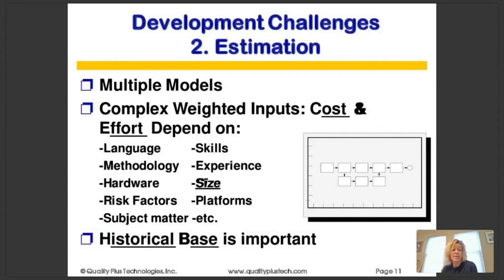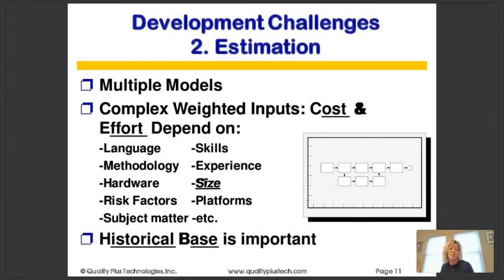Our cost and effort are going to be dependent on our language, methodology, skills, experience, hardware, risk factors, platforms, and subject matter. There are so many variables that come into play when figuring out how much it will cost to build a software product, and the size of that software product is of utmost importance. In order to do good estimation, we need some historical base on which to base our current estimates.